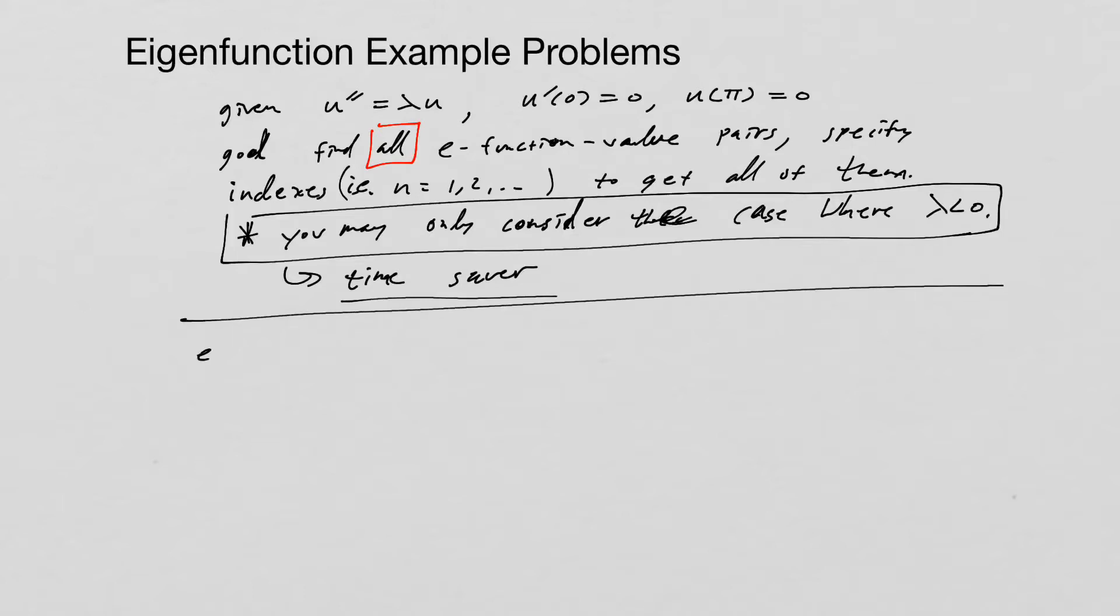We start with the characteristic equation, which is e to the r x is equal to u. We plug it into the differential equation, we'll get r squared e to the r x is equal to lambda e to the r x, which implies that r squared is equal to lambda. And that means that r is equal to plus or minus root lambda.